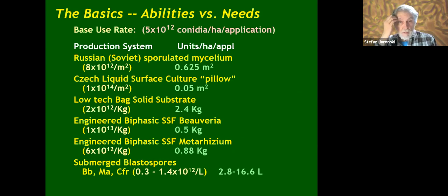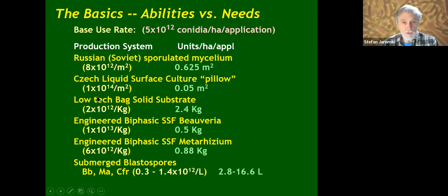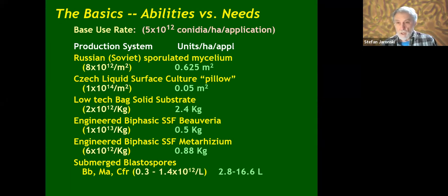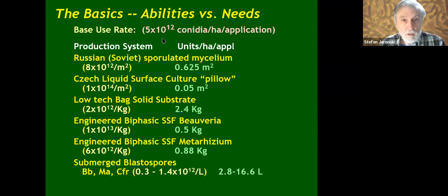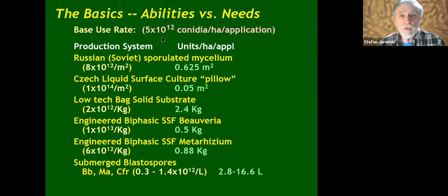Here's a comparison of different production methods. The old Soviet Russian method was to grow Beauveria or Metarhizium in liquid fermentation, pour it into open trays, and let it sporulate — getting 8×10¹² conidia per meter squared. The base use rate is 5×10¹² per hectare. For the liquid surface pillow method, one hectare requires only 0.05 square meters of mycelium surface, assuming their stated production rate of 10¹⁴ per square meter. Low-technology bag solid substrate — basically rice in a plastic bag — has lower yields and requires 2.4 kilograms per hectare.